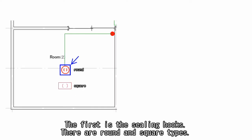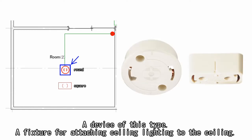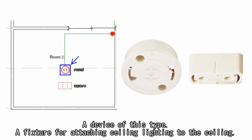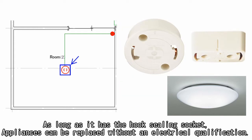The first is the ceiling hooks. There are round and square types. A device of this type, a fixture for attaching ceiling lighting to the ceiling. Ceiling lighting is a form of lighting that is often seen in living rooms. As long as it has the hook ceiling socket, appliances can be replaced without an electrical qualification.